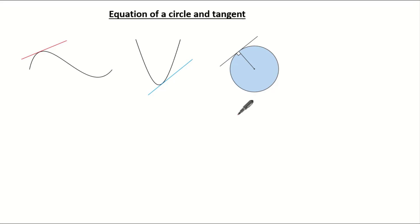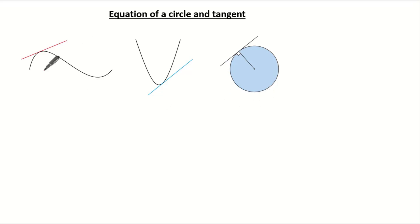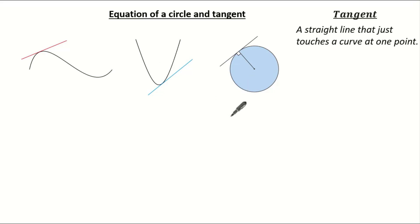Hello everyone and welcome to this tutorial on equations of a circle and its tangent. Let's go through what a tangent is. These are all examples of tangents. A tangent is basically a straight line that just touches a function or a curve at one point.